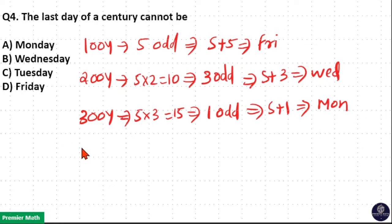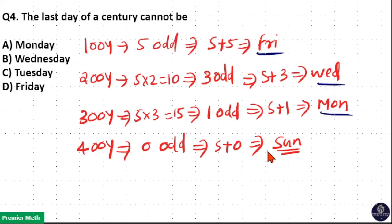Again, 400 years contains 0 odd days, which means Sunday plus 0 is Sunday itself. So the last day of a century can be Friday, Wednesday, Monday, and Sunday.